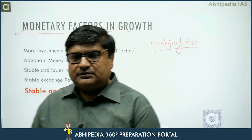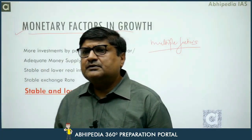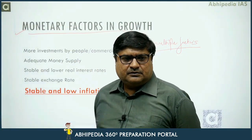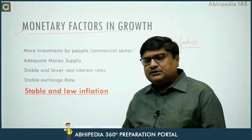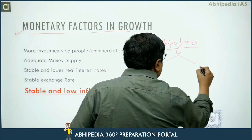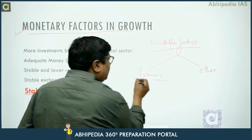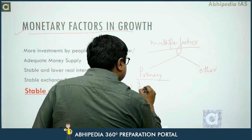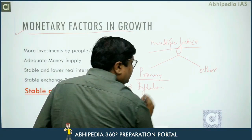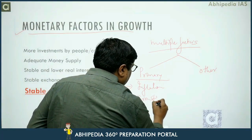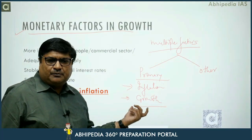So, what are the objectives of monetary policy? There are two types of objectives — primary objectives and other objectives. In the case of primary objectives, monetary policy takes care of inflation, keeping inflation within permissible limits, and second is fueling economic growth. These are the two primary objectives of monetary policy, as discussed earlier.